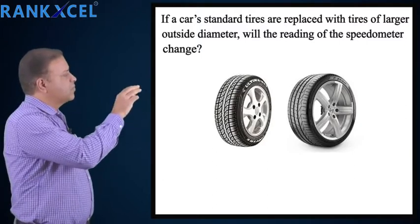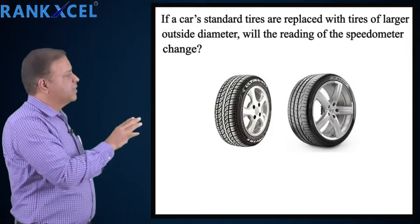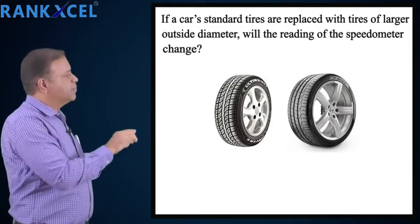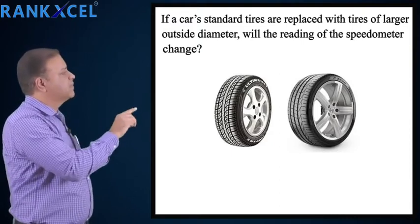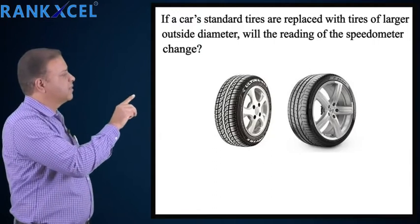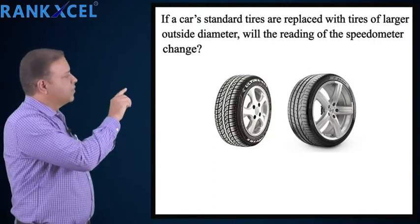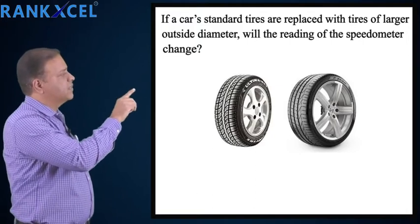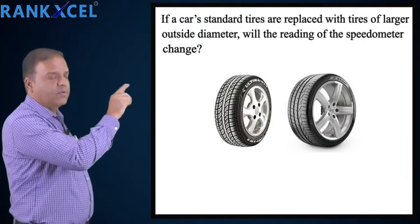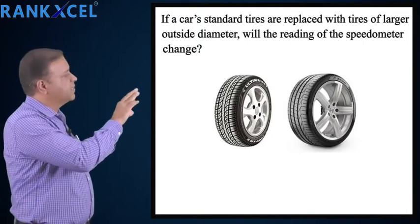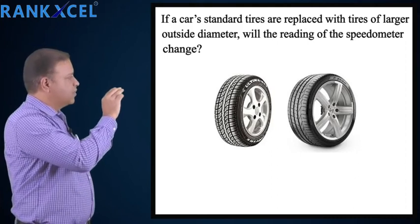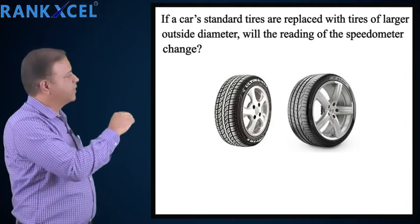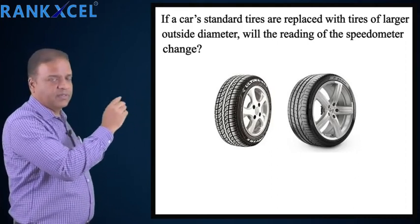The speedometer measures the number of revolutions per second of the tires. A larger tire will travel more distance in one full revolution. So in this case, the speedometer reading changes — we cannot rely upon the speedometer.